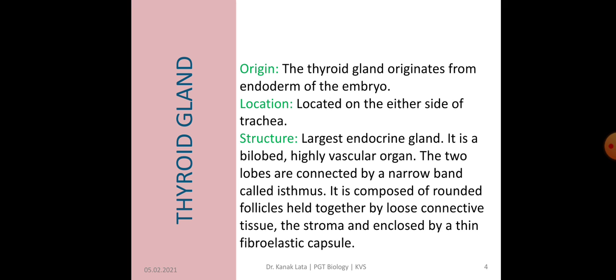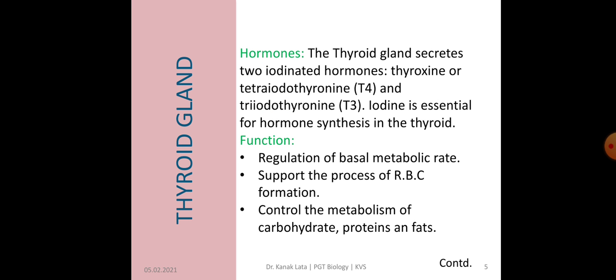It is composed of rounded follicles held together by loose connective tissue called stroma and enclosed by a thin fibroelastic capsule. The stroma contains blood capillaries and small groups of para-follicular or C-cells, also called as clear cells. Thyroid gland secretes two main hormones and these hormones are iodinated hormones, because iodine is required for their secretion.